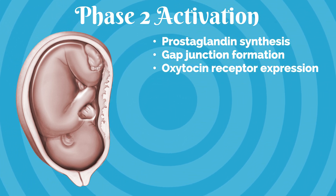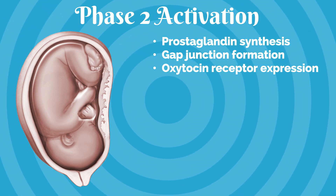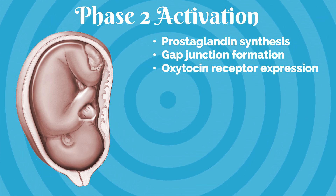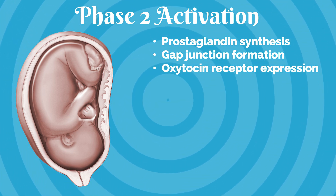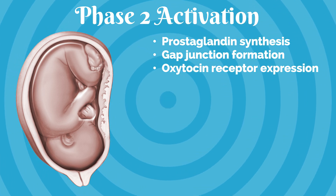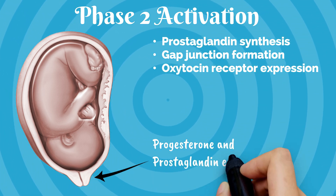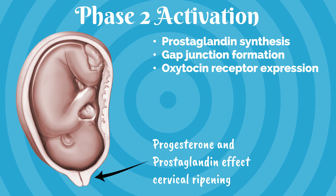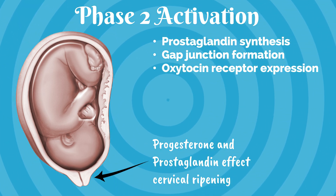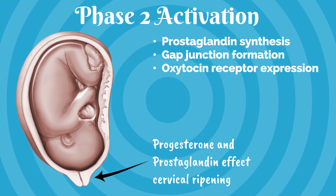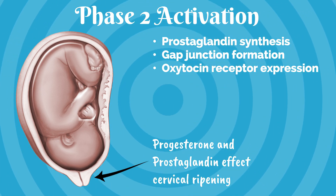Increased prostaglandin synthesis in the uterus, increased gap junction formation in the myometrium, and upregulation of oxytocin receptors all occur during phase two of parturition. Progesterone and prostaglandins also affect cervical ripening, causing a breakdown of stromal elements that allows for the effacement and dilation in phases one and two of parturition.